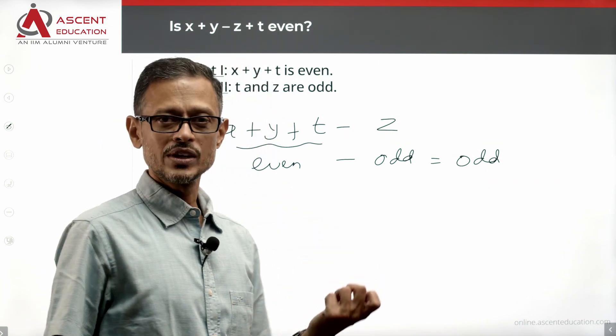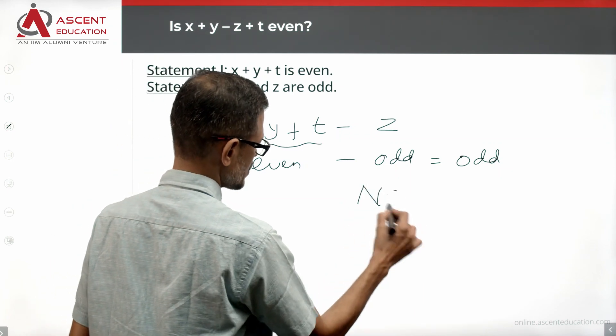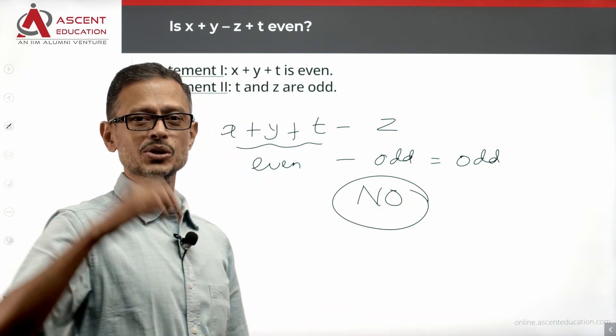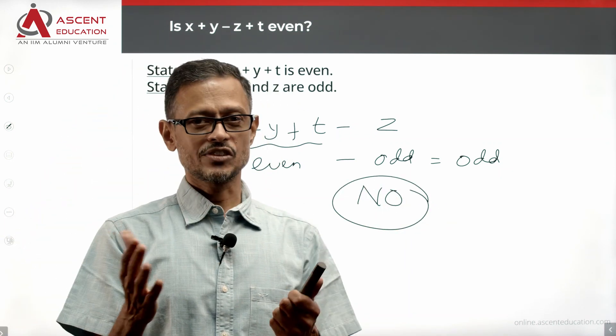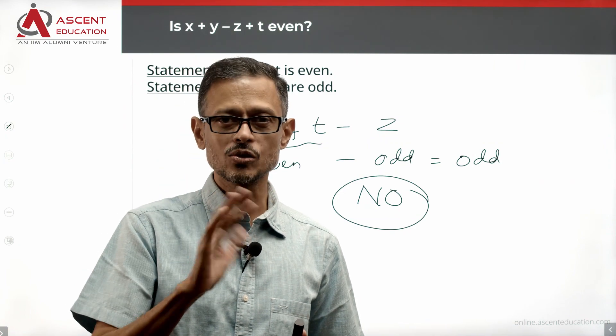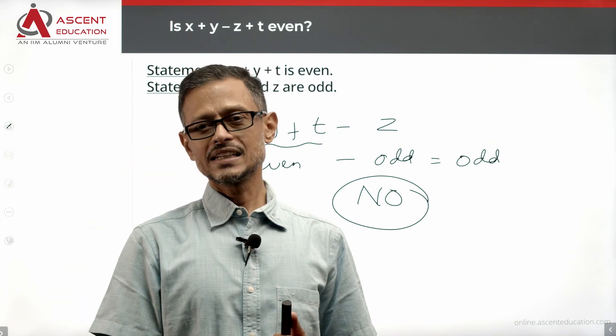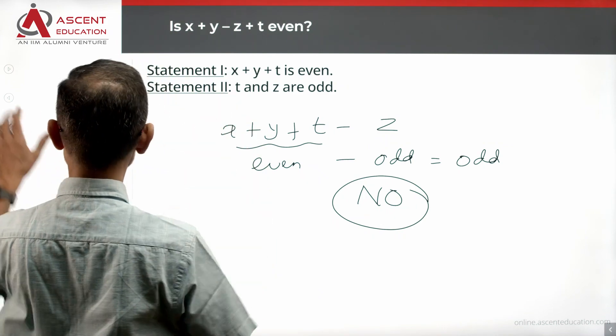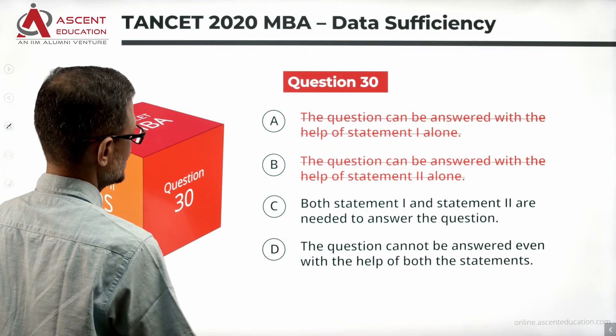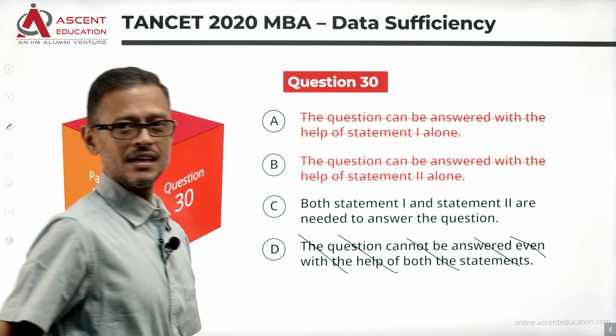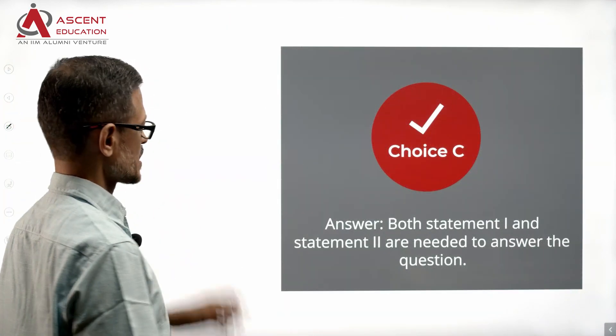The question is, is it even? If you know it's odd, the answer is a conclusive, a definite no. A definite no is data sufficient. A conclusive answer is sufficient. Combining the two statements, we have been able to come up with a definite answer. So data insufficiency is not a possibility, rule out. Answer option C is the correct answer to this question.